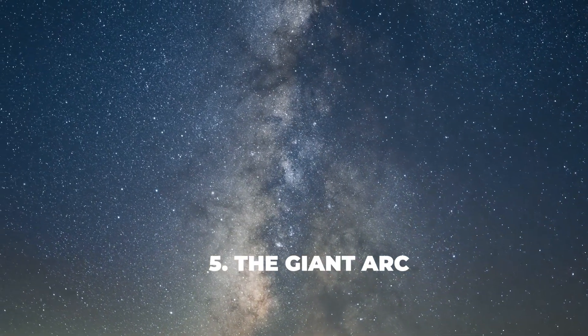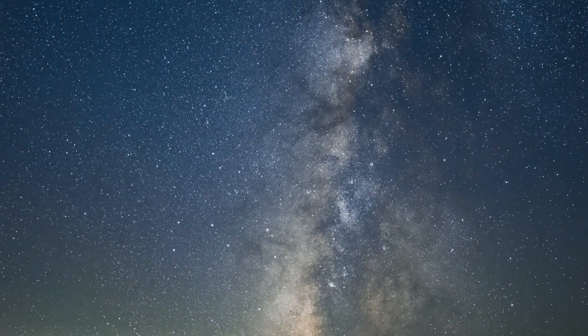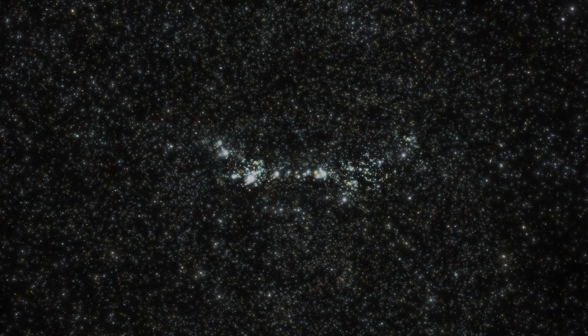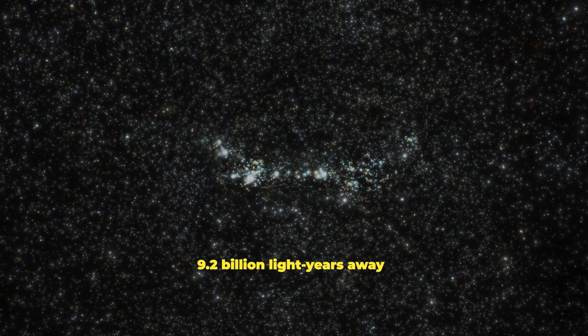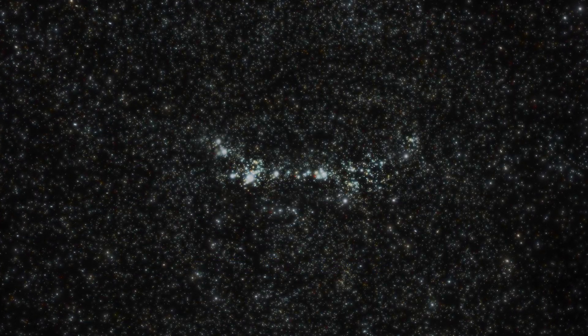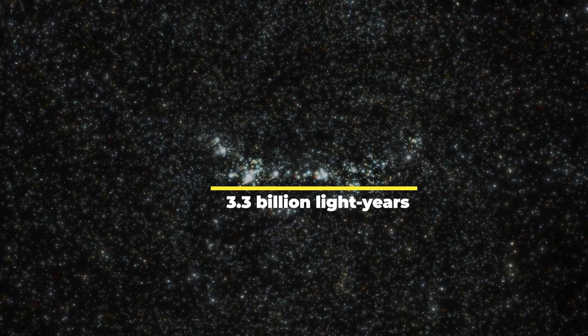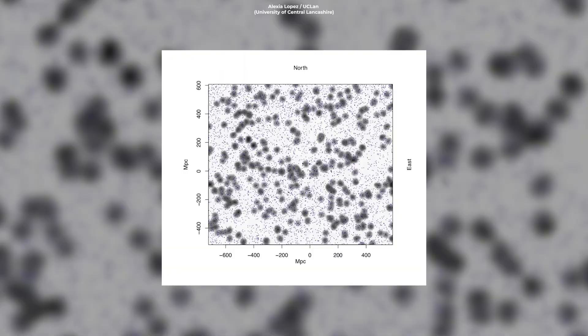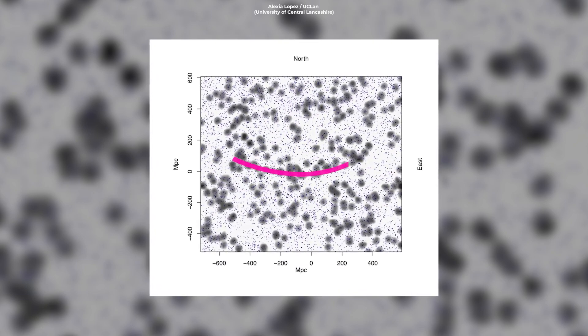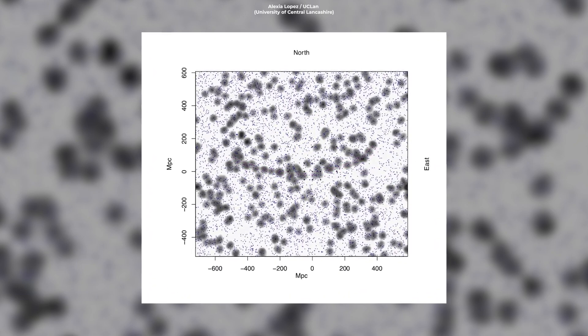Kicking off our list at number 5, we have the Giant Ark, a recently discovered colossal structure about 9.2 billion light-years away, comprising a string of galaxies that stretches across an astounding 3.3 billion light-years. This massive assembly of galaxies forms an arc-shaped pattern, hence its name.